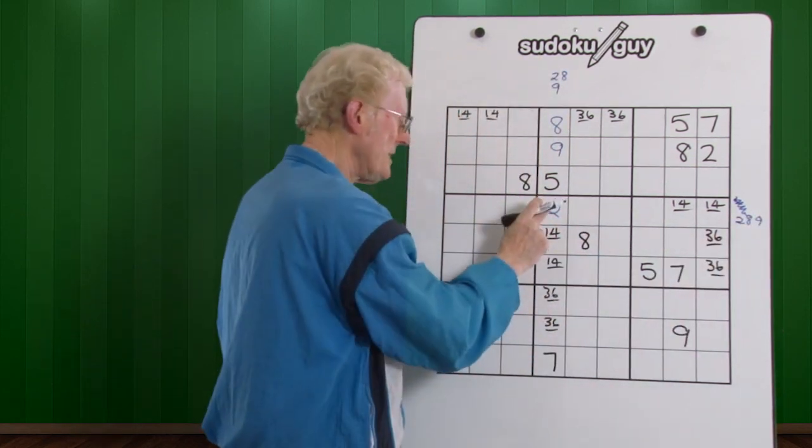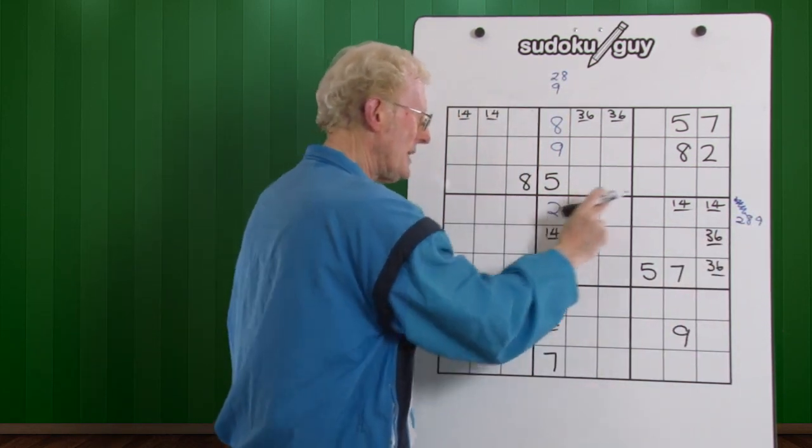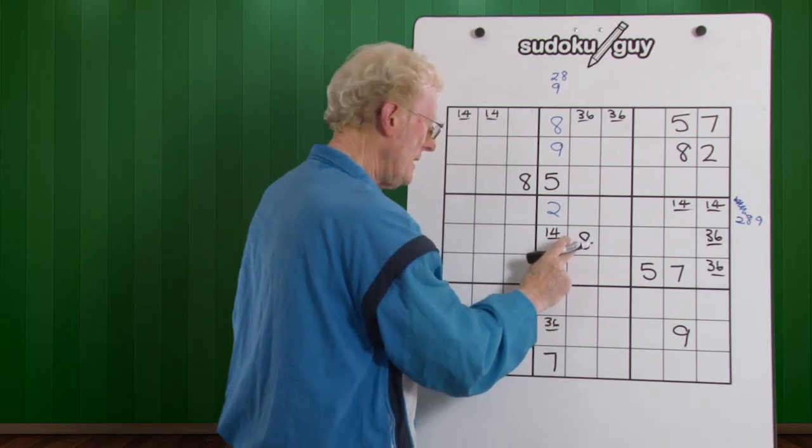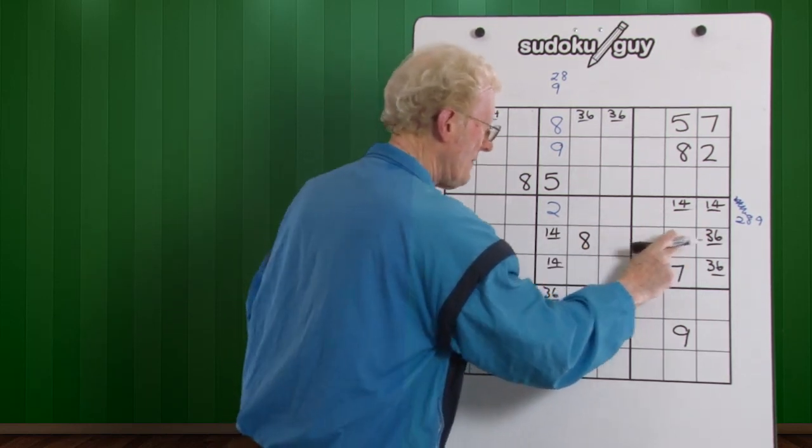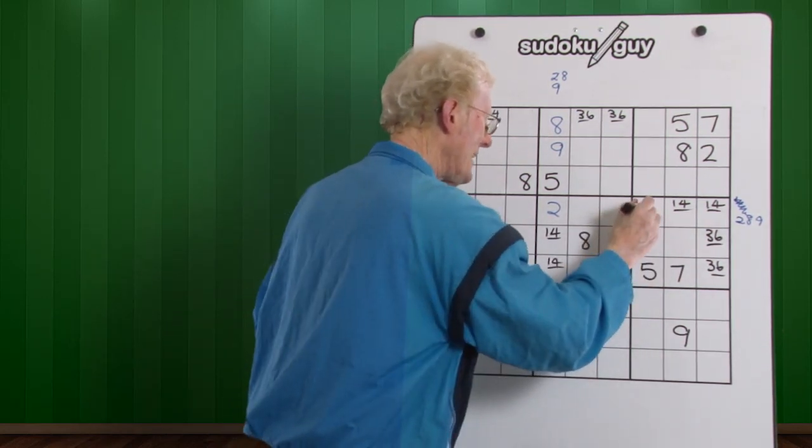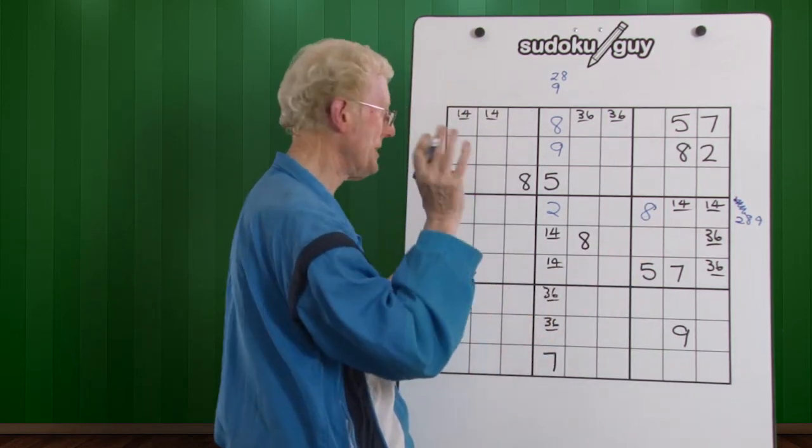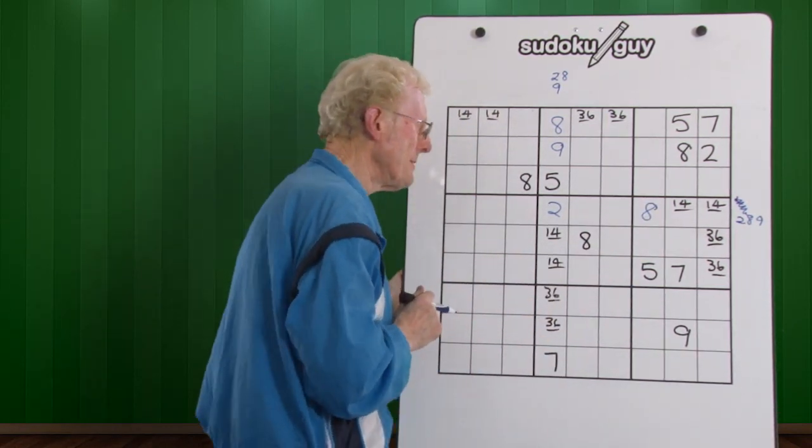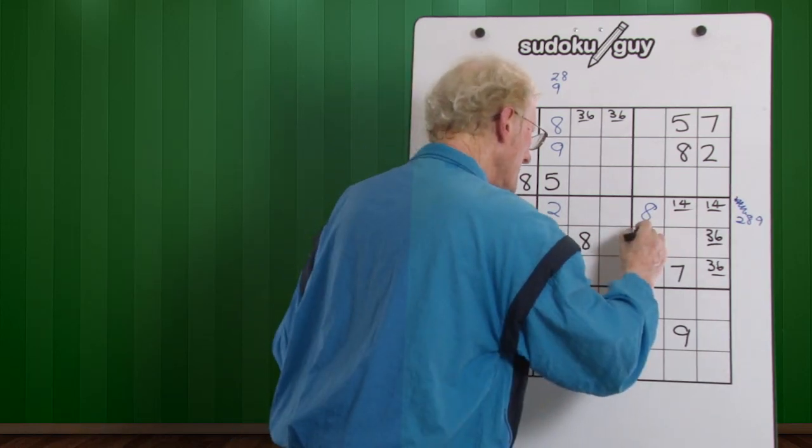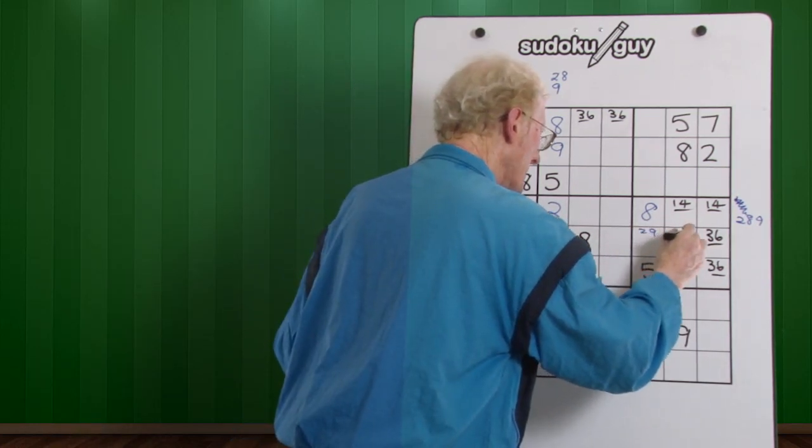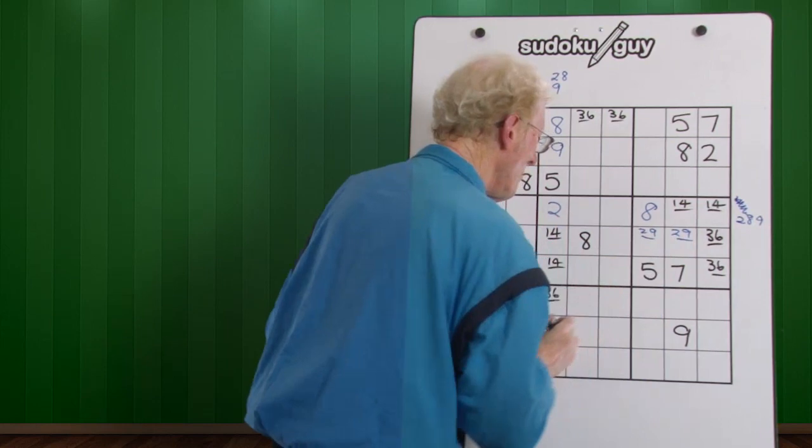Well, immediately, I see that there's a two here. So we can't have a two there. Here, this eight means you can't have an eight there. So that means the eight has to go there. There's nowhere else it can go. So now we're left with a two, nine, and a two, nine. Matching pair.